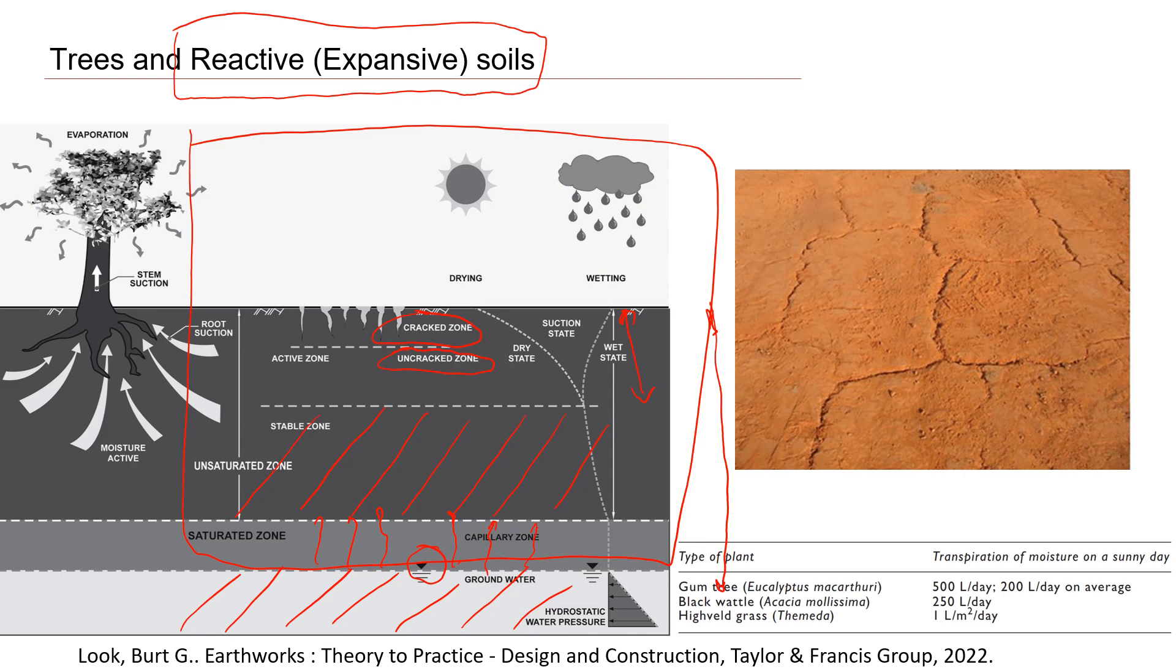For the cracked zone, it's the one close to the surface. When the weather is very dry and it's very hot, cracks will appear right on the surface, something like you see here.